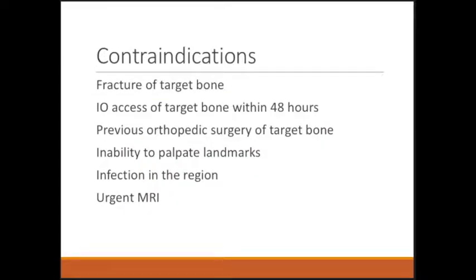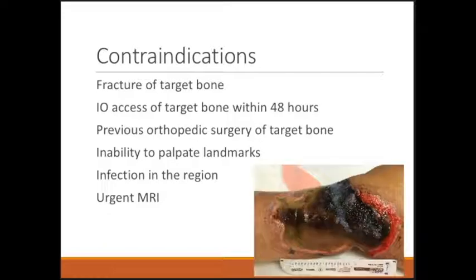So when should you avoid IO catheter placement? If what you're infusing into the bone could potentially leak out, you should avoid placing a catheter in that bone. This means avoiding bones with fractures or bones where you've already attempted IO catheter placement and poked a hole in the cortex. Here's an example of what can go wrong.